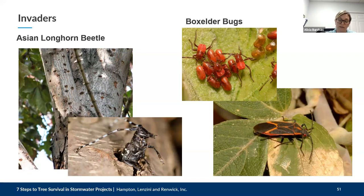Box elder bugs — which I think we've all seen — prefer box elder trees as hosts. They remove plant fluid from newly developing leaves, resulting in distortion of the foliage. Severely infested foliage may appear chlorotic — that is, yellowing from reduced chlorophyll. Box elder bugs may also damage flowers, tender twigs, and seeds of the box elder. Populations have been reported to prefer development on female trees.